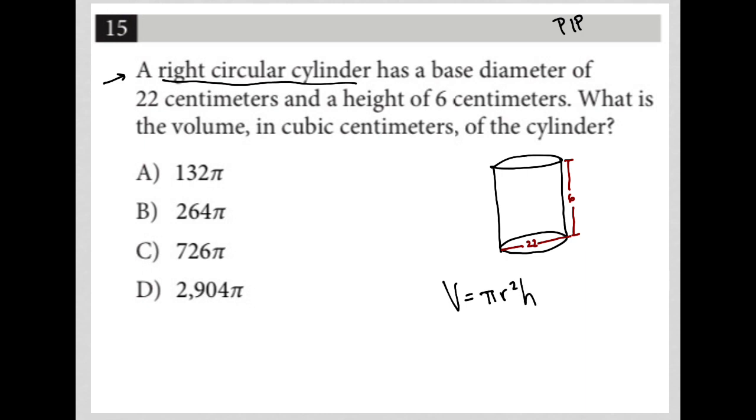If we know the diameter is 22, so if d equals 22, the radius is always half the length of the diameter. So that means r is equal to 11. And of course, we were told h is equal to 6. So we know exactly what to plug in for our variables here.